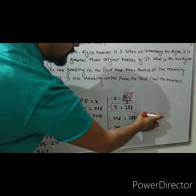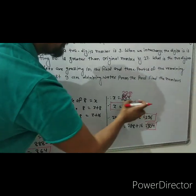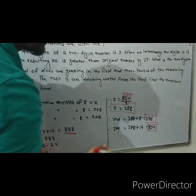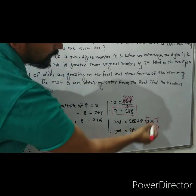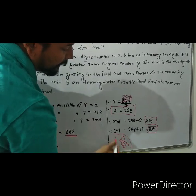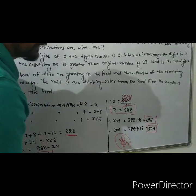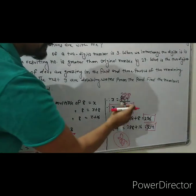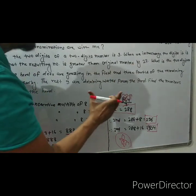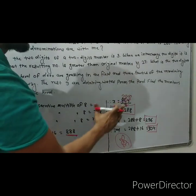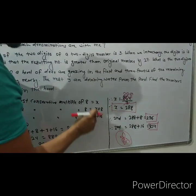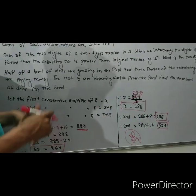When we add these three consecutive multiples of 8, the total sum we get is 888. So these are the three consecutive multiples of 8. This is the right answer.